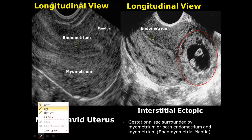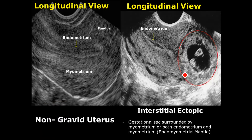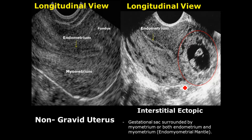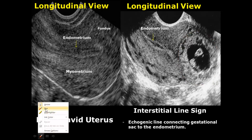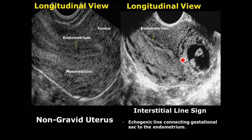The next type is the interstitial ectopic pregnancy, which occurs in the upper uterine horns. The gestational sac is away from the endometrium and is surrounded by myometrium and endometrium — this is called the endomyometrial mantle. One feature of interstitial ectopic is the interstitial line sign, which is an echogenic line connecting the gestational sac to the endometrium.